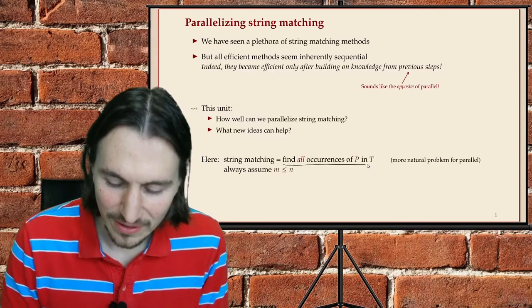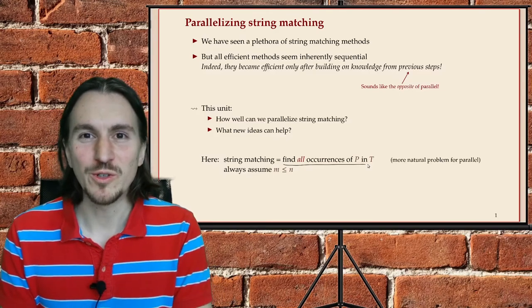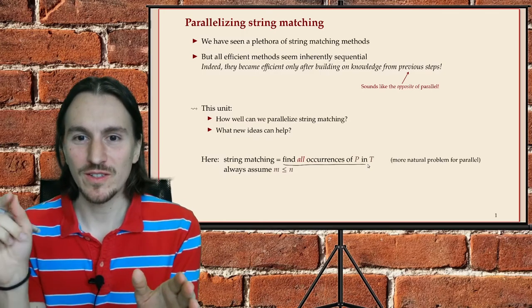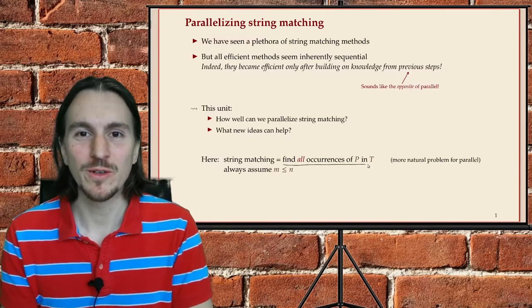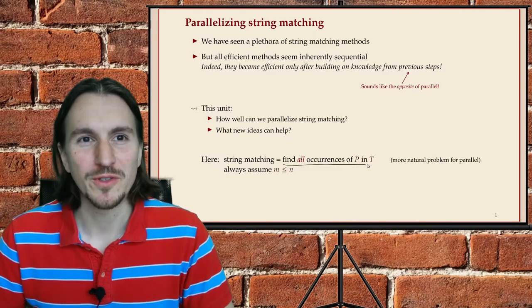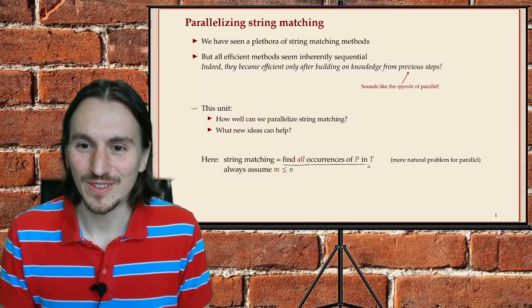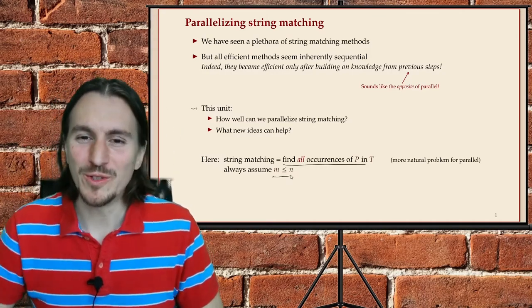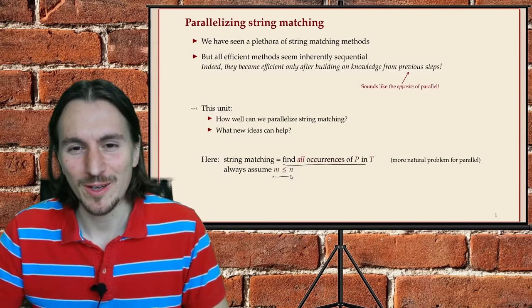We can imagine producing an output bit array where it has the same length as the text, and we set that bit array to one if an occurrence of the pattern starts at that position, and zero otherwise. That's an easy way to represent this. Also, unlike in the previous section, I do want to assume that the pattern is shorter than the text. It's always easy to test for this, and if the pattern is longer than the text, we don't expect any occurrences.